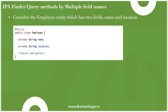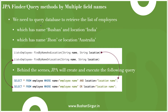Consider we have an Employee entity with two fields: name and location, and we need to query the database to retrieve employees with name 'Bushan' and location 'India' — matching both criteria. To achieve that, we can create finder methods using logical operators. The naming convention is: find by the field name, use the logical AND operator, then follow with the next field name. So in camel case: findByNameAndLocation. You can add any number of fields you want.